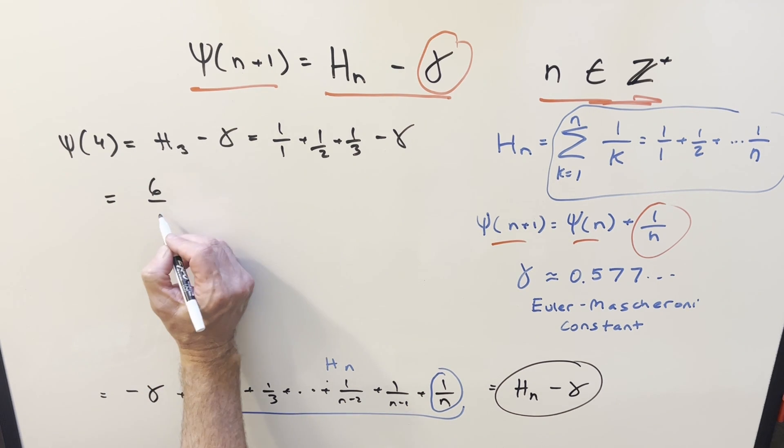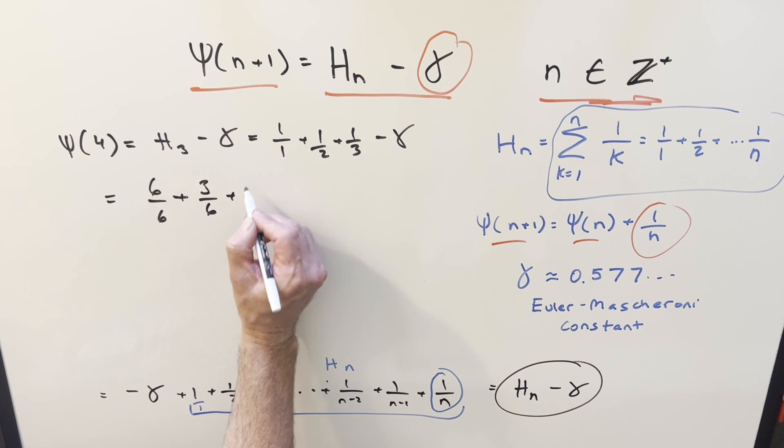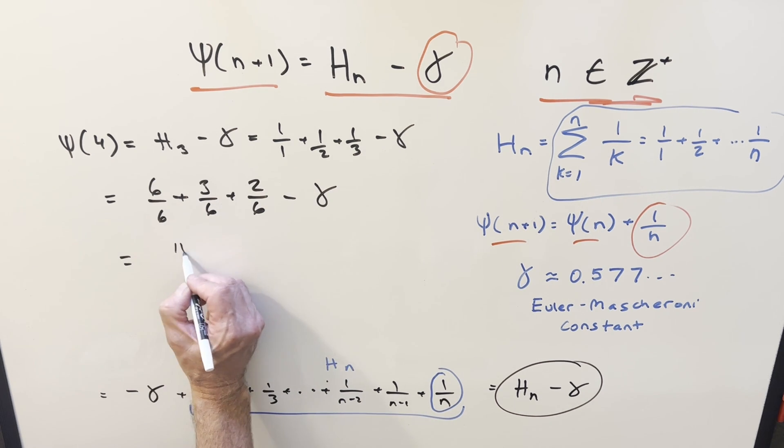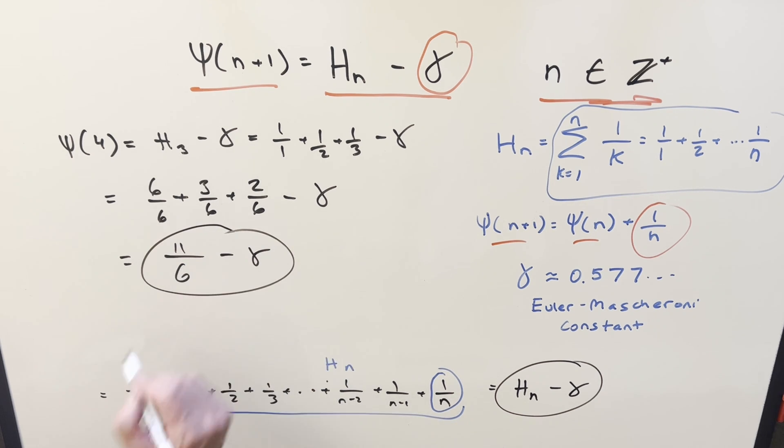Let's get a common denominator really quick. So it's going to be 6 over 6 plus 3 over 6 plus 2 over 6 minus the constant. Putting this together, we end up with our solution to this. 11 over 6 minus the constant.